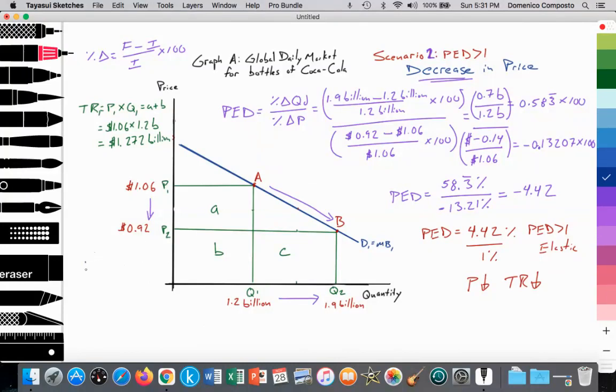And then when we lower the price, total revenue, I'm sorry, this is a big mistake. Let me go back. I was thinking of the inelastic. So when price falls, total revenue should rise. Please note that if price falls, total revenue should rise if the demand curve is elastic. So when we look at our new total revenue, TR2, which is equal to the new price, P2 times Q2, which is equal to areas B plus C. We're going to take that price of $0.92 times 1.9 billion. And that works out to $1.748 billion.